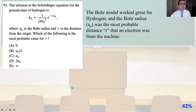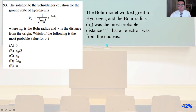Problem 93: the solution to the Schrödinger equation for the ground state of hydrogen is given, where A₀ is the Bohr radius and r is the distance from the origin. Which of the following is the most probable value for r? The Bohr model worked great for hydrogen, and the Bohr radius A₀ was the most probable distance an electron was from the nucleus. So that's going to be answer C.